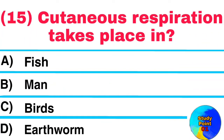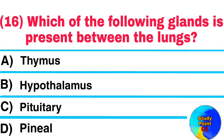Question No. 15. Cutaneous respiration takes place in? Answer: Earthworm. Question No. 16. Which of the following glands is present between the lungs? Answer: (not captured).